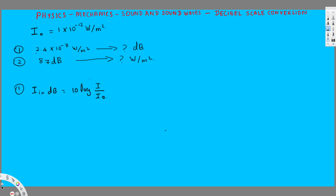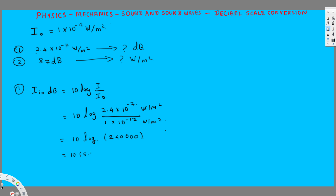So we have 10 times log of 2.4×10⁻⁷ divided by I₀, which is 1×10⁻¹². Both are in Watt per meter square. If you calculate this value, it comes out to be 240,000, and log(240,000) equals 5.38. Multiplying these two values gives us 53.8 decibel. That is how we convert Watt per meter square into decibel.